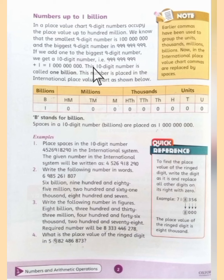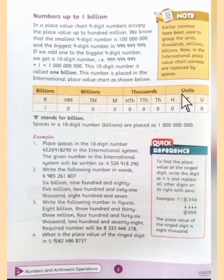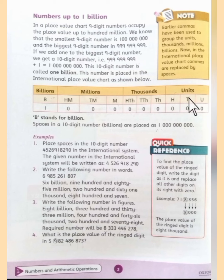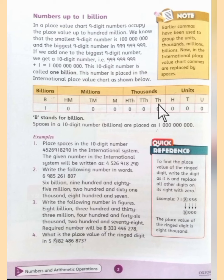This 10-digit number is placed in the international place value chart as shown below. Students, we call these boxes periods. Firstly, you have the unit period. In this, you have first the unit place, then the 10th place, then the 100th place. And the second period, you have thousands.